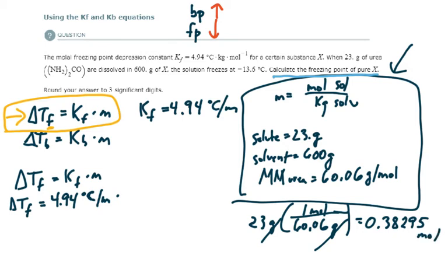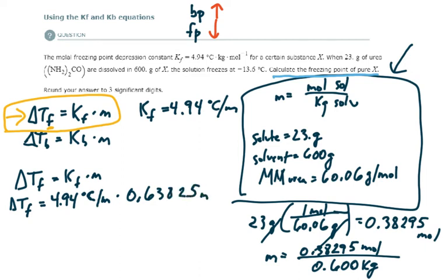So the molality is 0.38295 moles divided by the mass of the solvent in kilograms, which would be 0.600 kilograms. So that divided by 0.600 gives me a molality of 0.63825 molal.